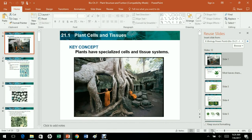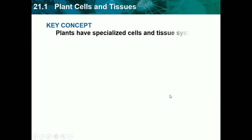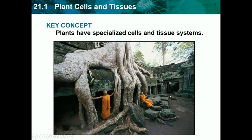Hello, this is Josh Patel back again with another biology video. Today we're going to be doing chapter 21, which is plant structure and function. We'll be starting on lesson one, which is plant cells and tissues. Our key concept is plants have specialized cells and tissue systems.